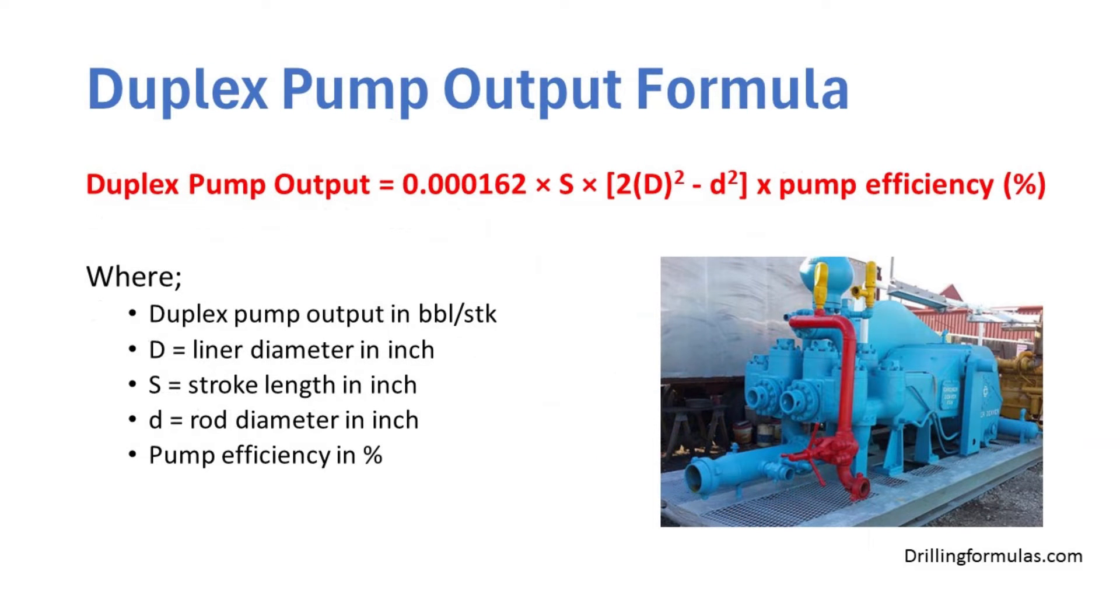Duplex pump output formula is 0.000162 multiplied by stroke length, multiplied by 2 times liner diameter square minus rod diameter square, multiplied by pump efficiency.